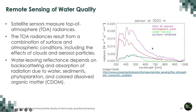Water-leaving reflectance depends on backscattering and absorption of radiation due to water, sediments, phytoplankton, and colored dissolved organic matter. Looking at wavelengths from blue all the way to near-infrared, the total TOA radiance is dominated by the atmospheric path contribution. The surface reflectance and water-leaving reflectances are smaller components. To study the water surface, this large atmospheric contribution must be removed through atmospheric correction.